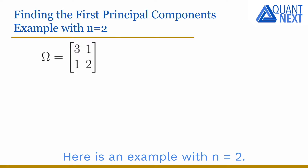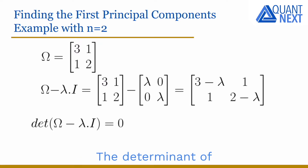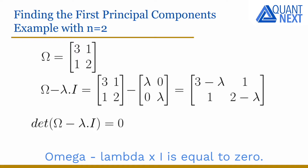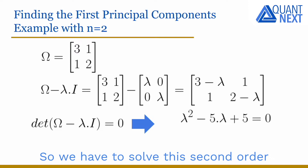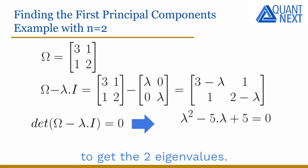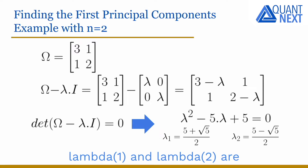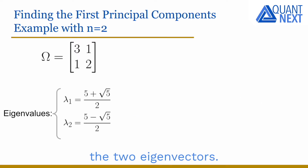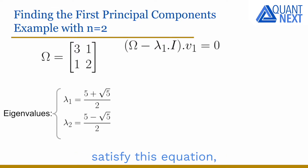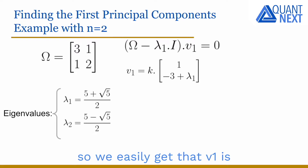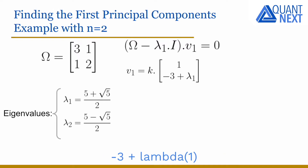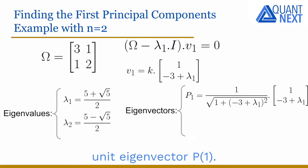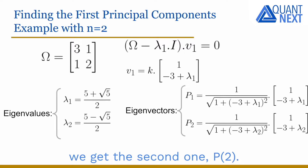Here is an example with n equal to 2. We consider the following covariance matrix omega. The determinant of omega minus lambda times I is equal to zero, so we solve this second-order polynomial equation to get the two eigenvalues. Lambda_1 and lambda_2 are the two solutions — the two eigenvalues of omega. Now we find the two eigenvectors. The first eigenvector must satisfy this equation, so V1 is proportional to the vector with 1 as first coordinate and minus 3 plus lambda_1 as second coordinate, giving us the first unit eigenvector P1. Similarly we get the second one P2.